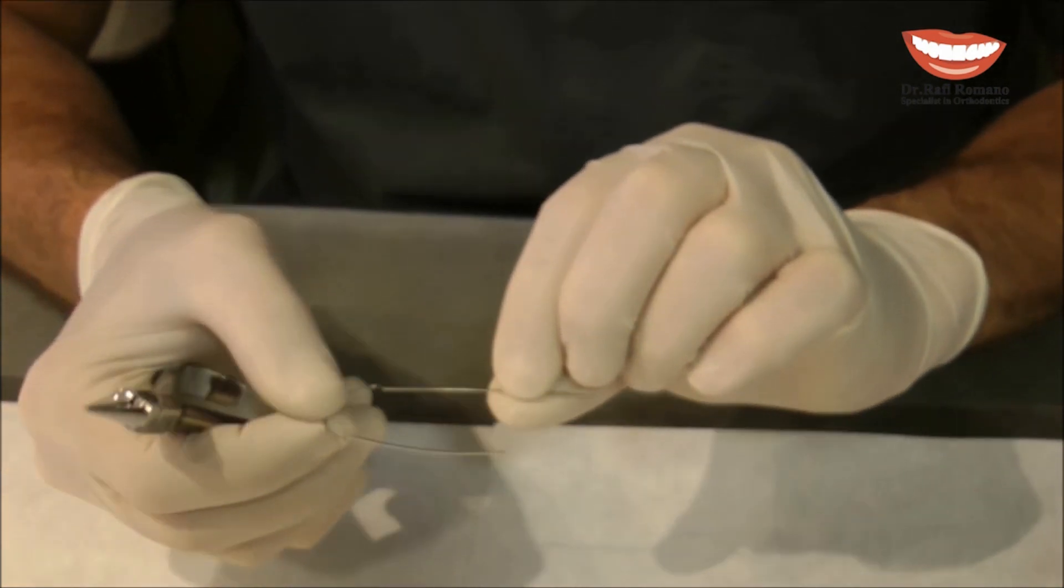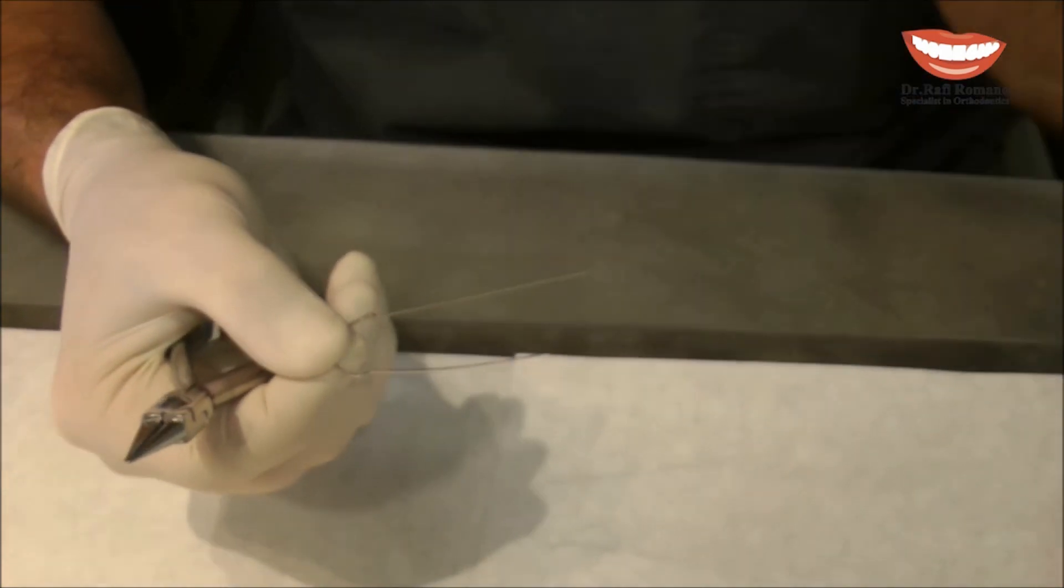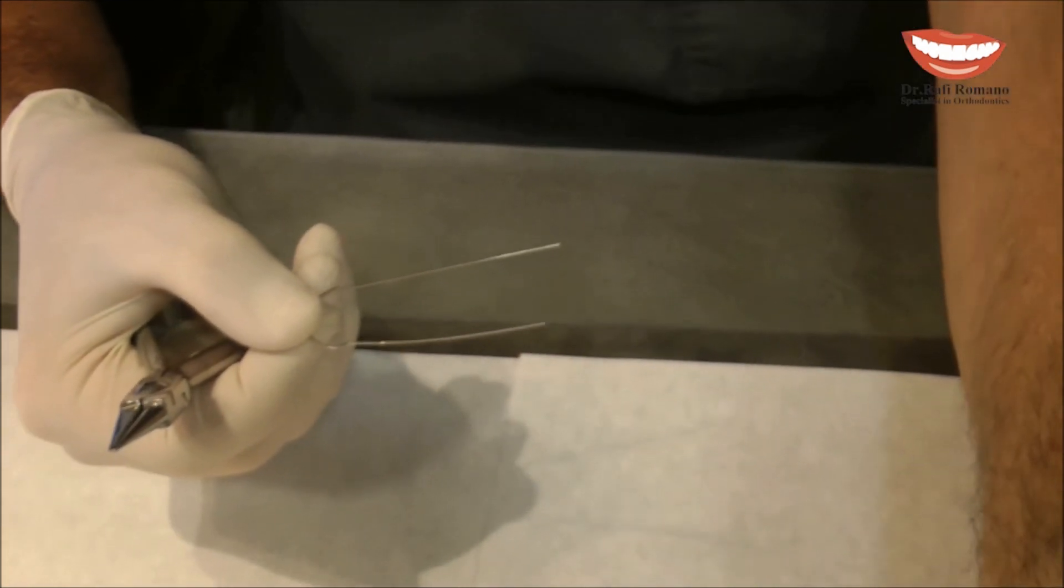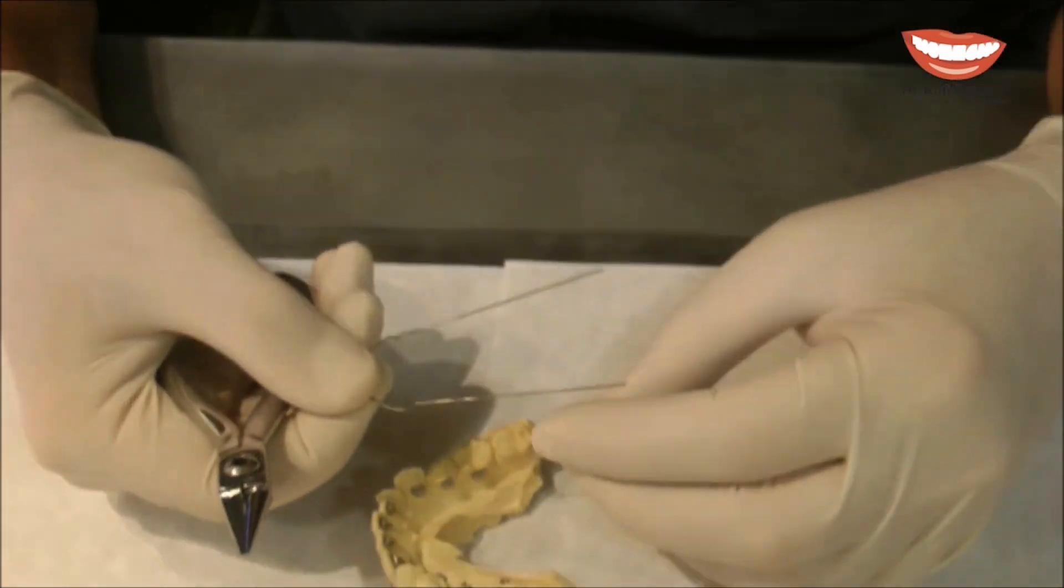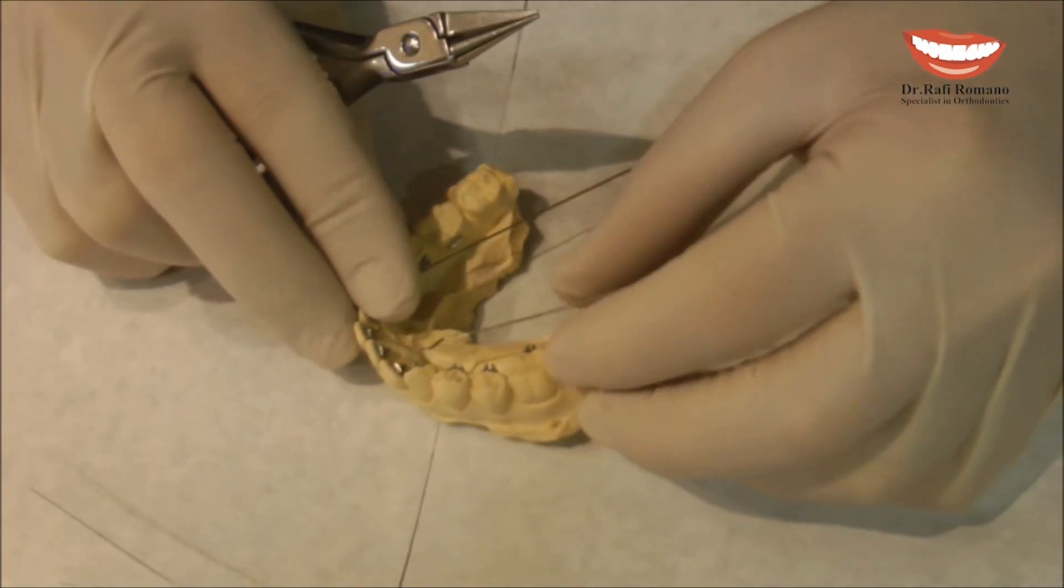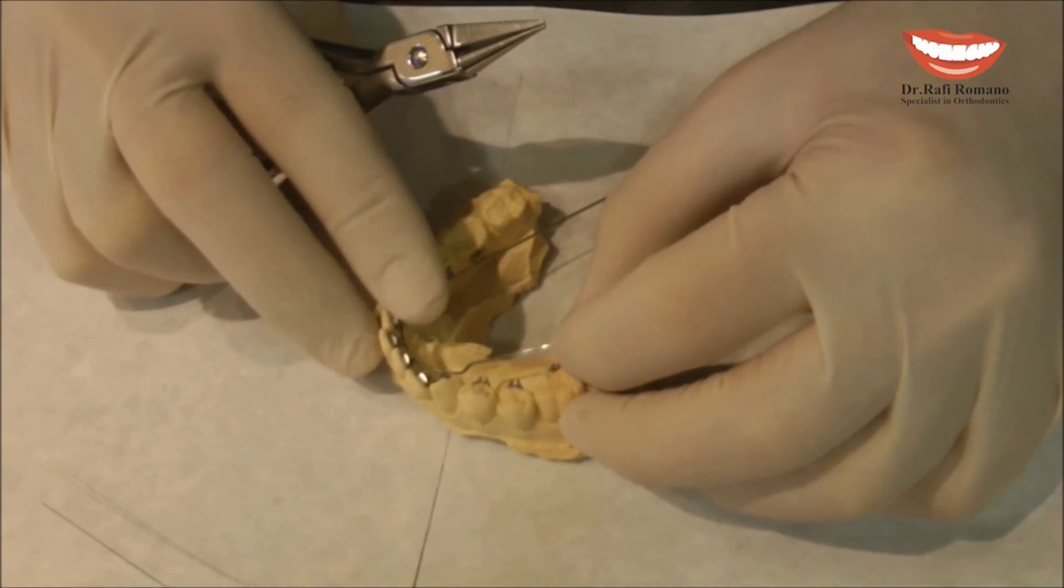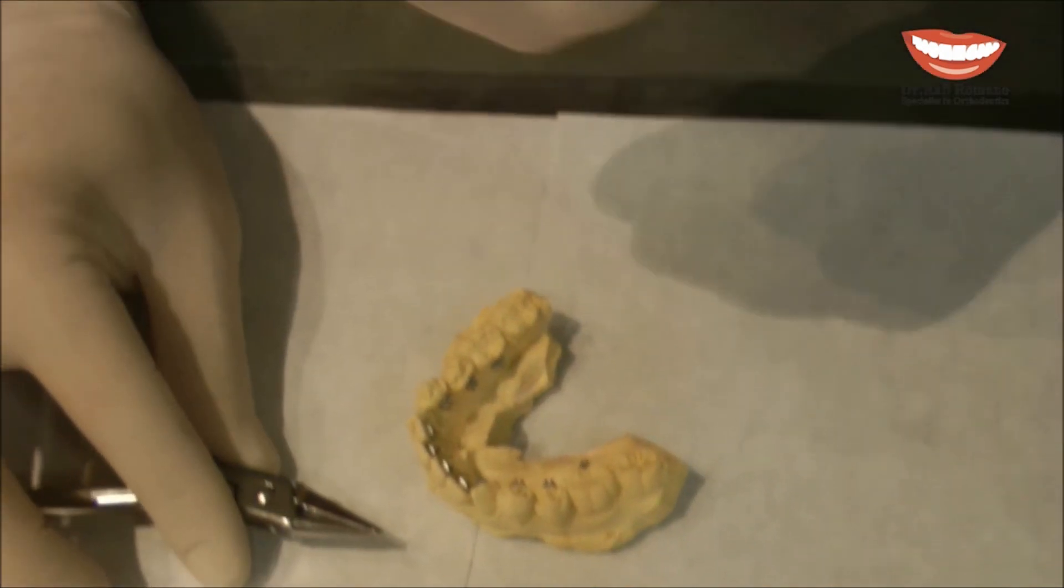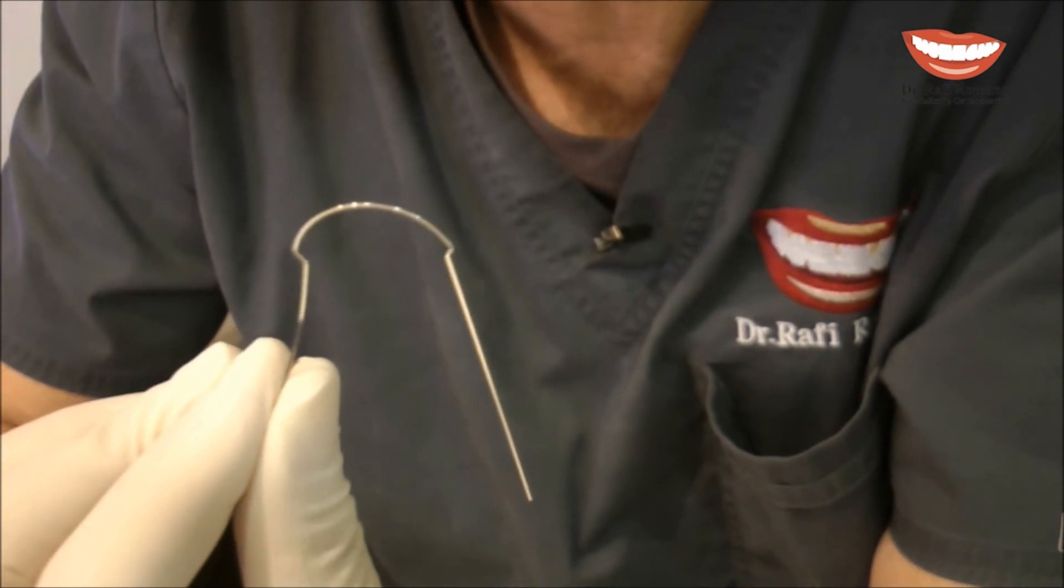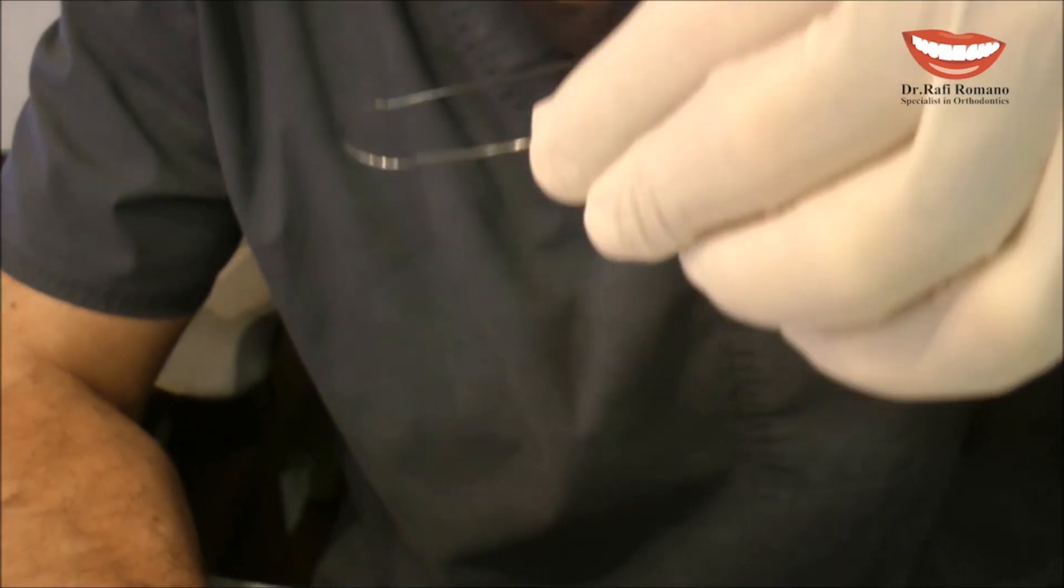Now when you want to know if the band is big enough just imagine where you cut the wire. If this is your arch the wire will be cut eventually here. So now you can see that the band that we have made is too small.